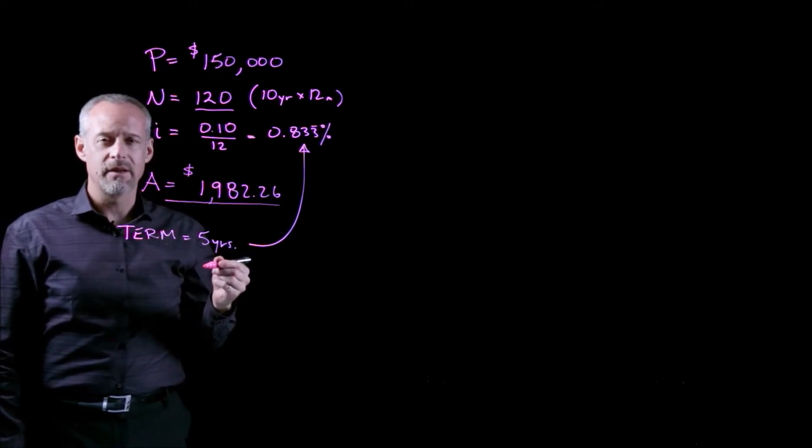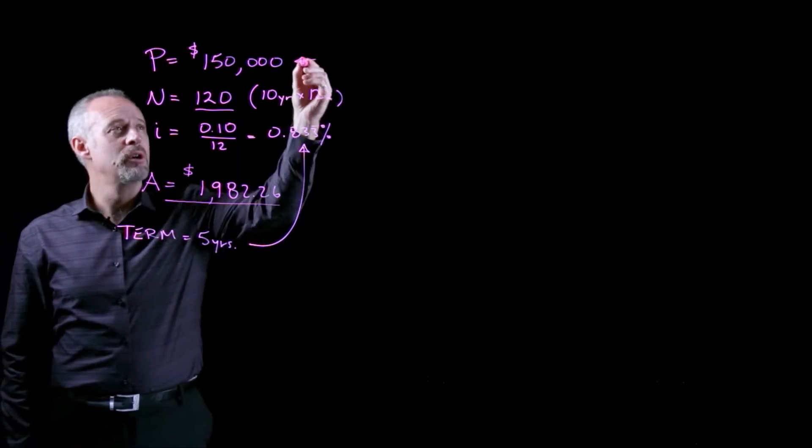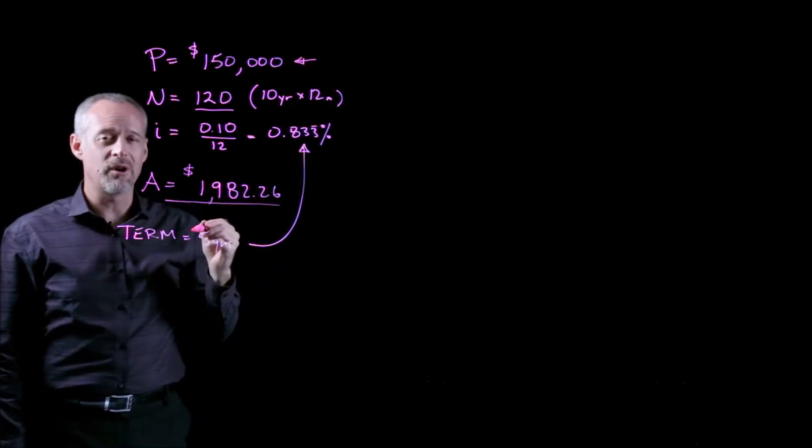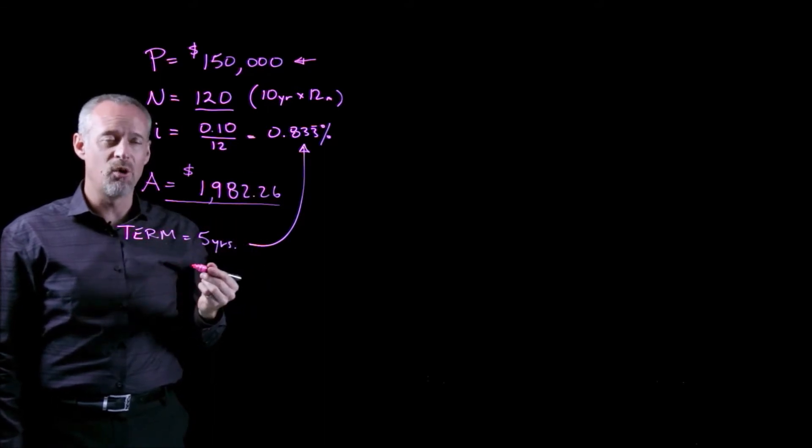And in order to do that, we need to know how much of the original borrowed amount, the principal of the mortgage, the $150,000, how much is still owing.